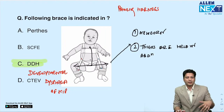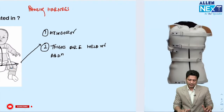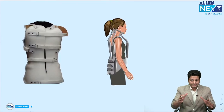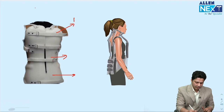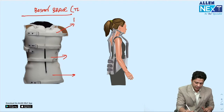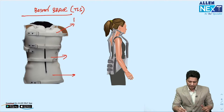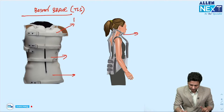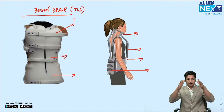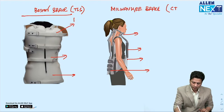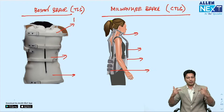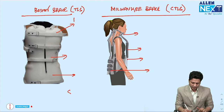Important braces in orthopedics: the Boston brace immobilizes the thoracolumbar and sacral column — also known as the TLS brace. The Milwaukee brace immobilizes the entire vertebral column including the cervical spine — also known as the CTLS (cervico-thoraco-lumbosacral) brace. Both are indicated in scoliosis to limit progression of the deformity.